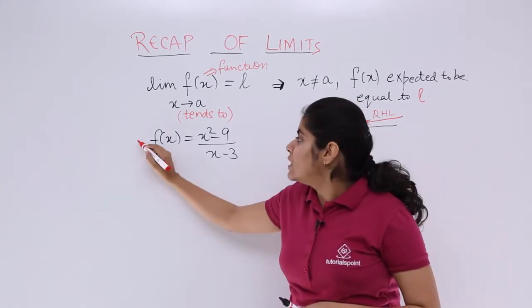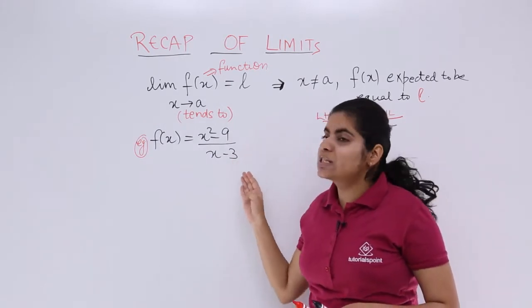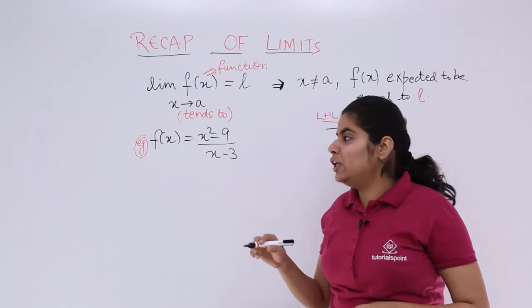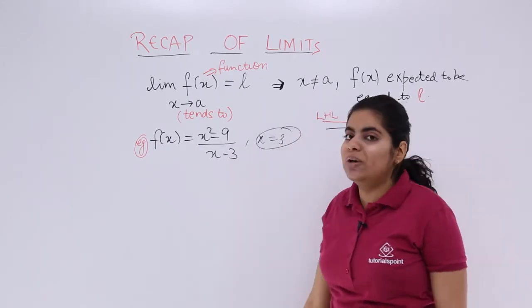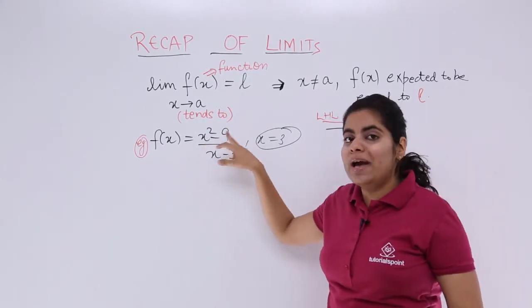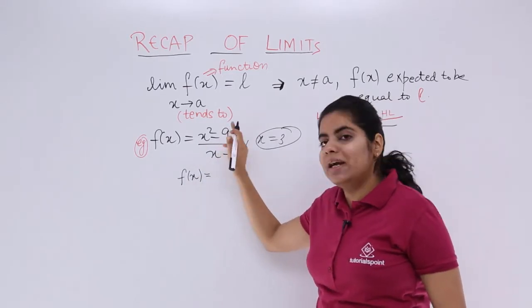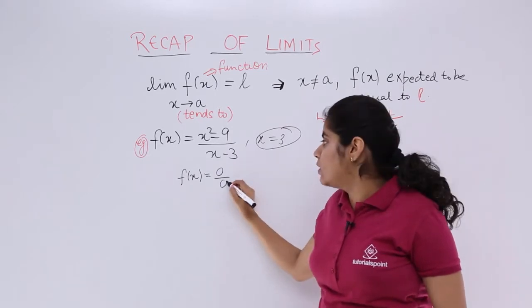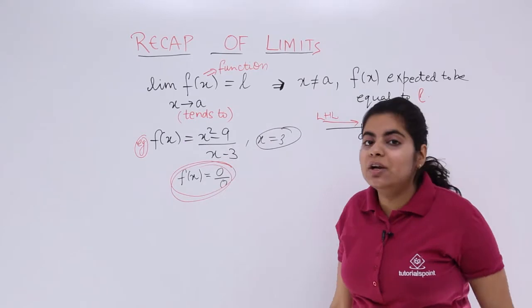Suppose we have this example. f(x) = (x²-9)/(x-3). What is the value of the function when x equals 3? f(x) = 3²-9, which gives (9-9)/(3-3) = 0/0. That means I have got an indeterminate form.